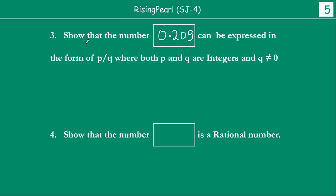This is interesting to understand. Show that the number 0.209 can be expressed in the form p by q where both p and q are integers and q not equal to 0. If you are asked to show a decimal number can be expressed in the form p by q where both p and q are integers and q not equal to 0, this is nothing but a rational number.